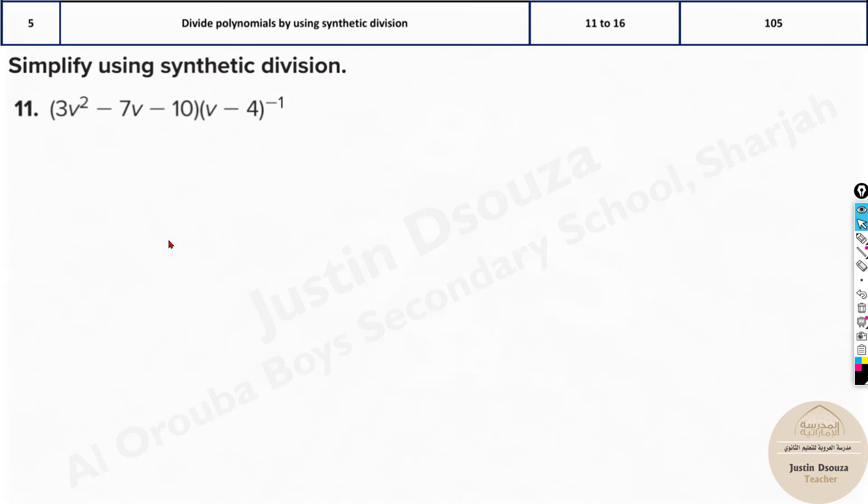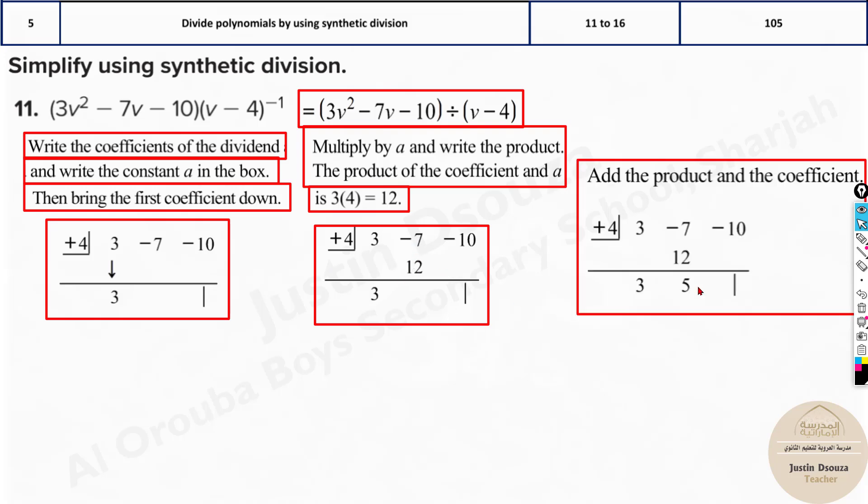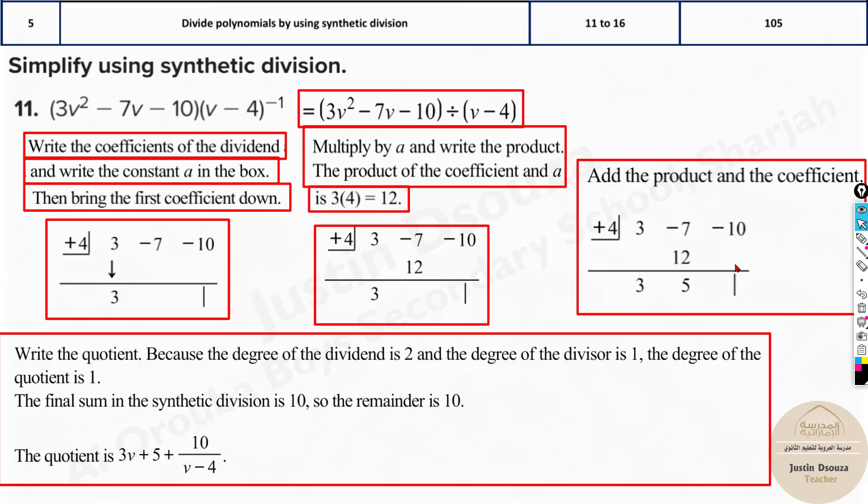This is the method: the three comes down, then you multiply three with four, you write the term over here, that's 12, and add them up. Five, and then multiply it, and it goes on. You get the remainder and everything. But now I will tell you the shortcut method in the calculator.